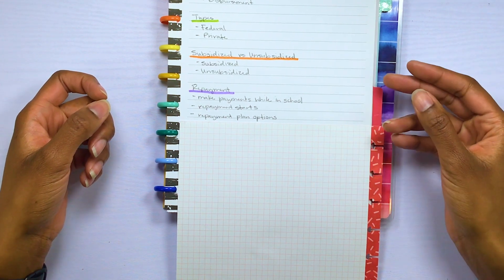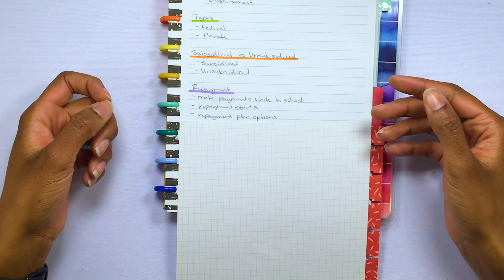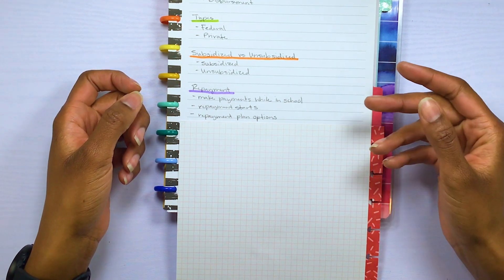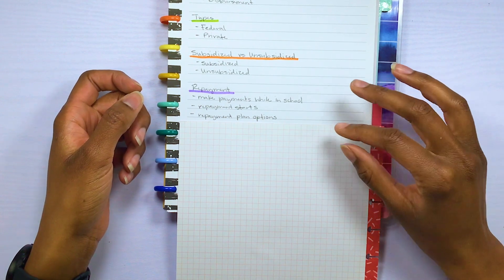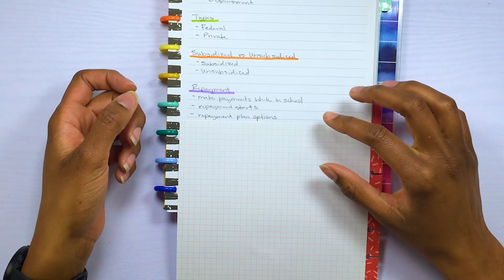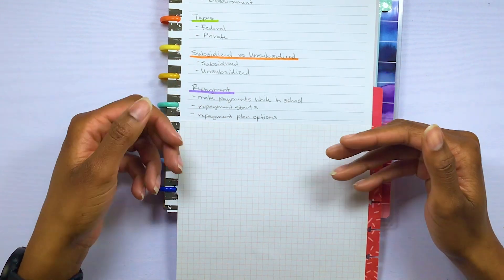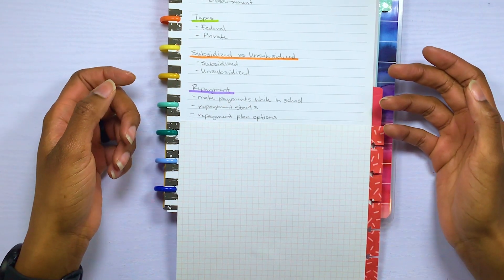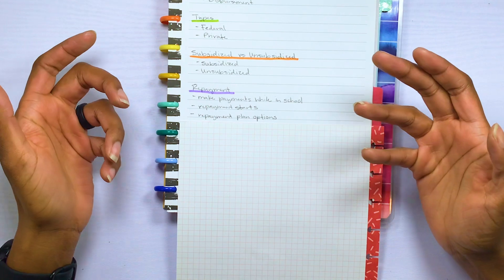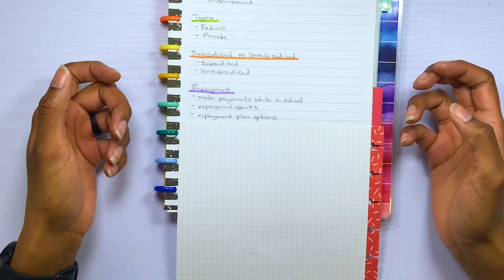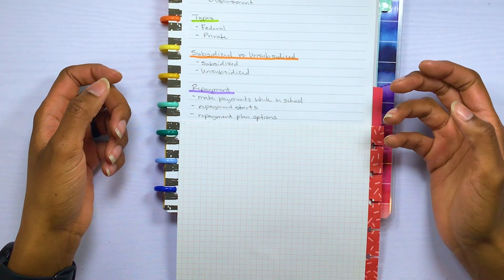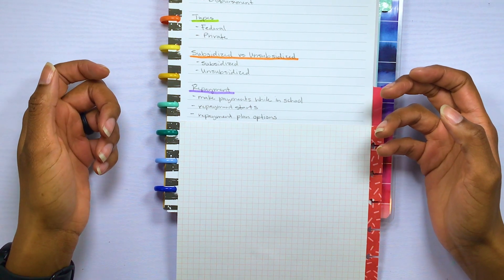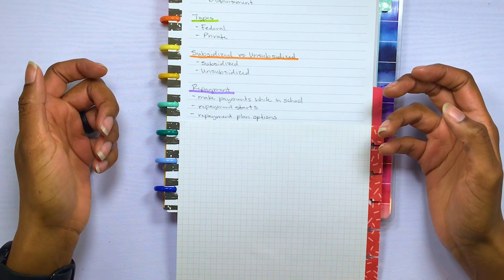And then there's the income driven repayment plans, and that is based on your income and your family size. But your monthly payments could be zero. So I'm mentioning this one specifically because this could be a better option for you if you're going through like a hard time, other than forbearance and deferment, because this allows you to make some type of payment and the payments that you do make will be applied to any unpaid or accrued interest. And also with this repayment plan, loan forgiveness is possible if the loan isn't paid in full after 20 to 25 years.